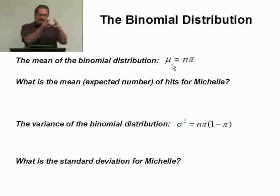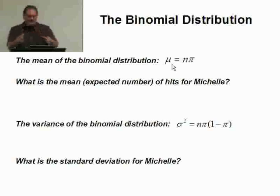The mean is simply n, the number of trials, times pi, the probability of the individual success.